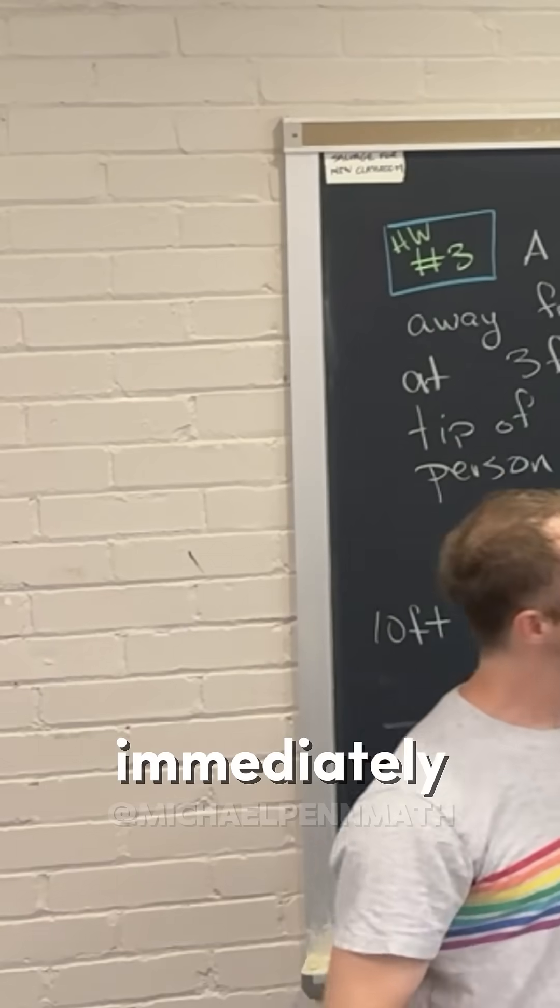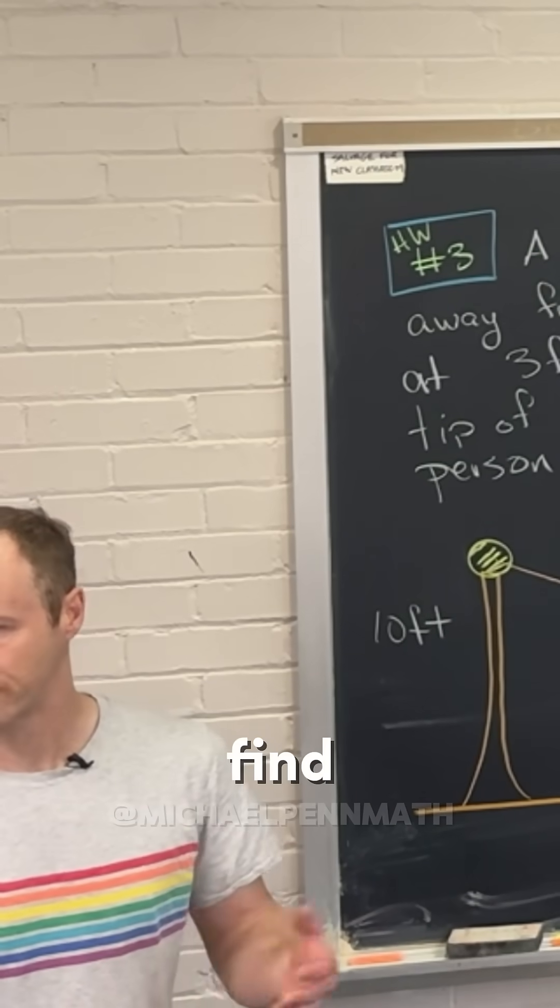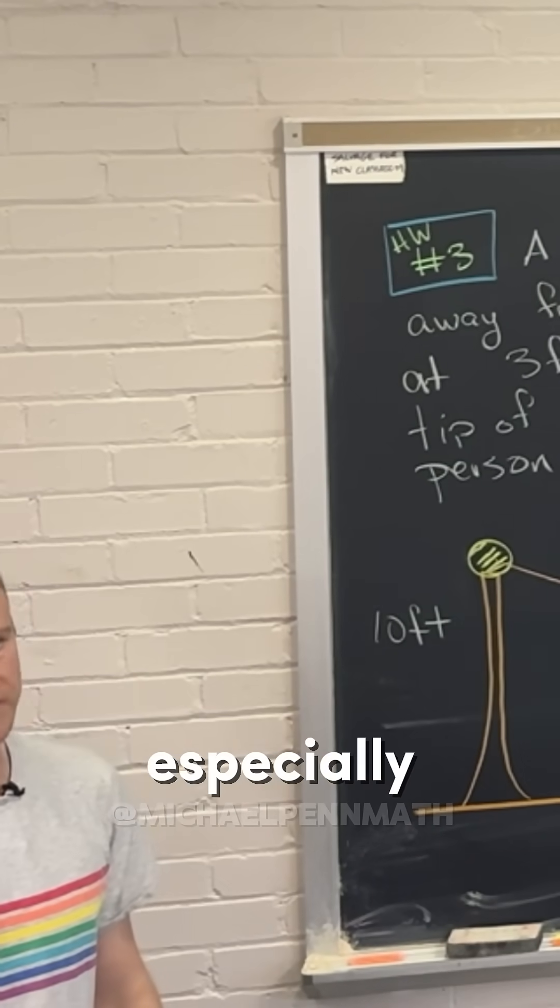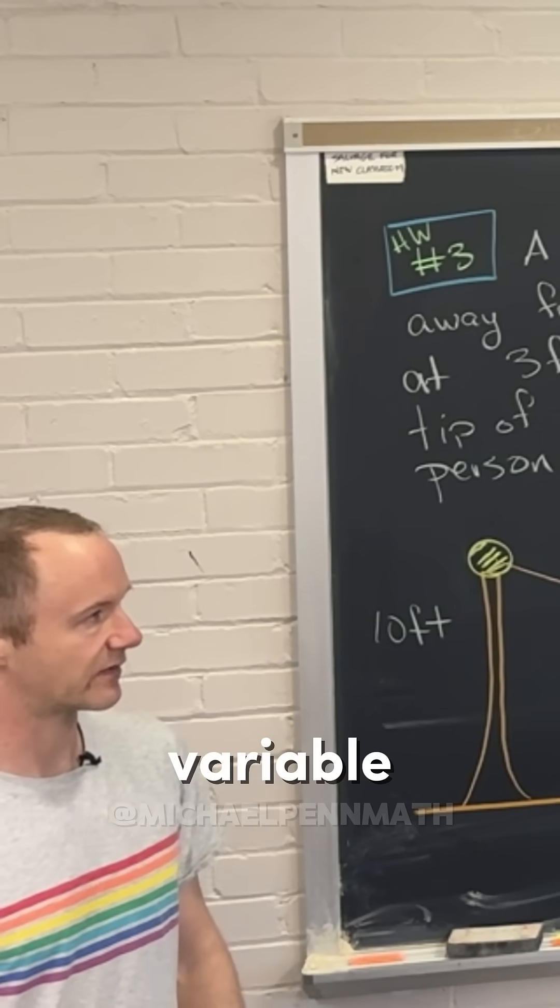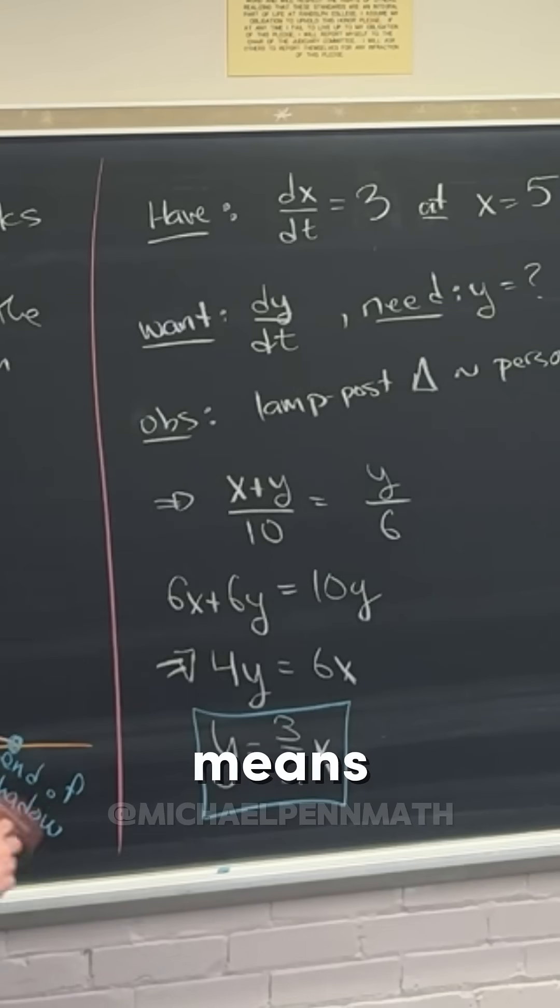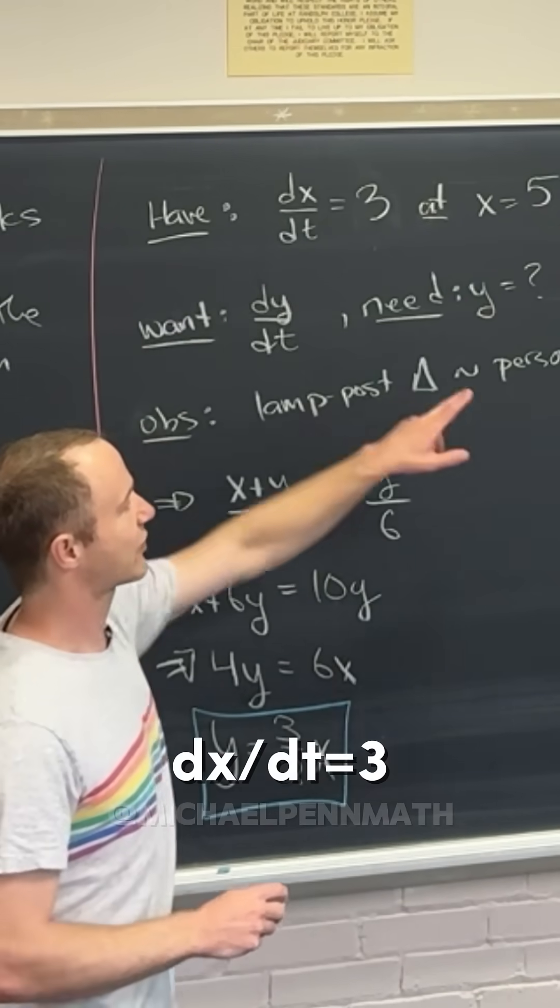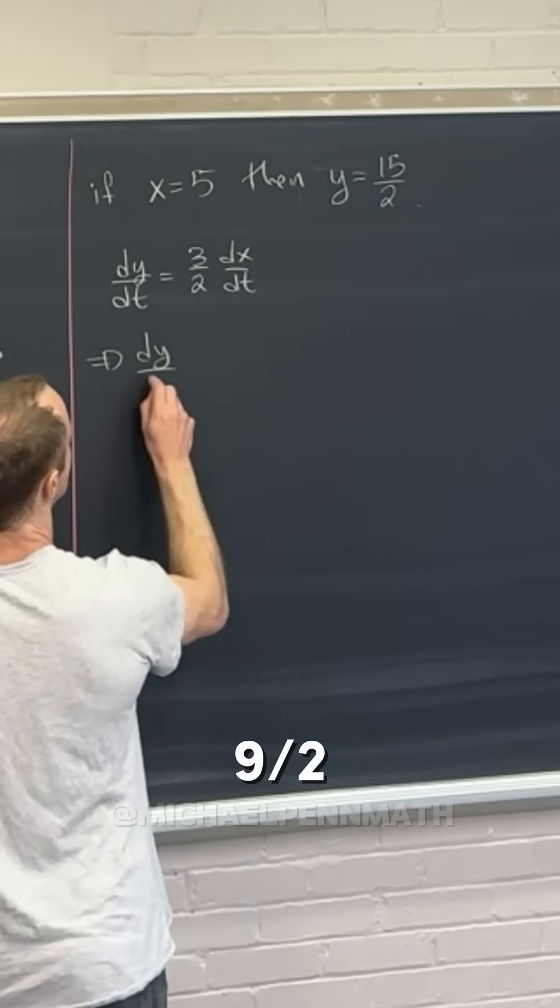Let's immediately notice that we actually didn't need y, but it's nice to find everything just in case, especially because a lot of times you will need to solve for some not given variable. We have dy by dt equals three halves dx by dt, so that means if dx by dt is 3, then dy by dt is 9 over 2.